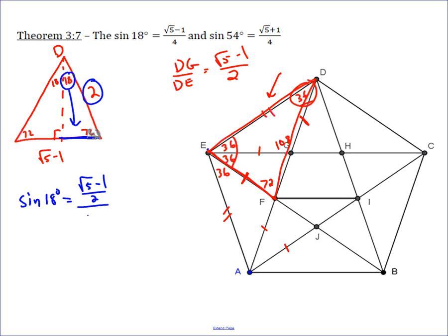Doing a quick simplification by multiplying the top and the bottom by 1 half, we get root 5 minus 1 over 4. And that is the exact value of sine of 18 degrees.